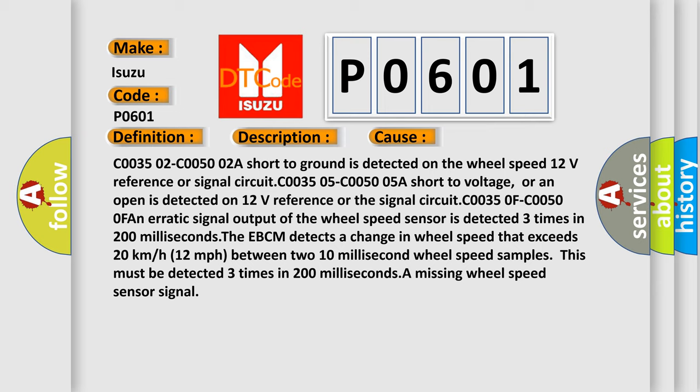C00350F, C00500F: An erratic signal output of the wheel speed sensor is detected three times in 200 milliseconds. The EBCM detects a change in wheel speed that exceeds 20 km/h (12 mph) between two 10 millisecond wheel speed samples. This must be detected three times in 200 milliseconds. A missing wheel speed sensor signal.